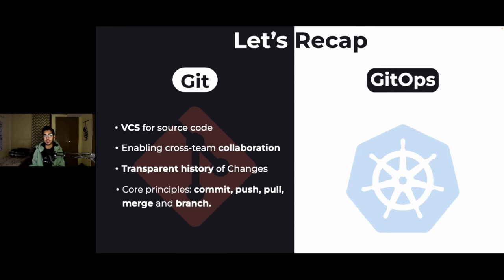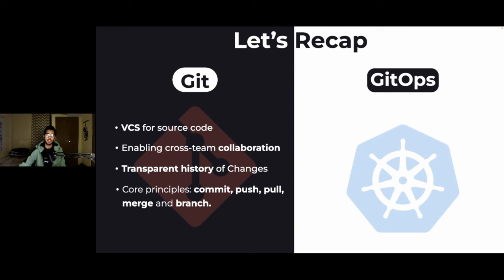There are a few core operations that Git enables us to perform: you can commit your code, push, pull, merge, and also create branches if you have a large codebase with different teams working on it. That's where the concept of branching is pretty helpful.